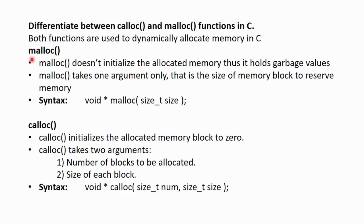First, we will take a look at malloc. Malloc doesn't initialize the allocated memory. Thus, the memory that is being initialized by malloc holds the garbage value. Malloc takes only one argument and that is the size of the memory block to reserve the memory.